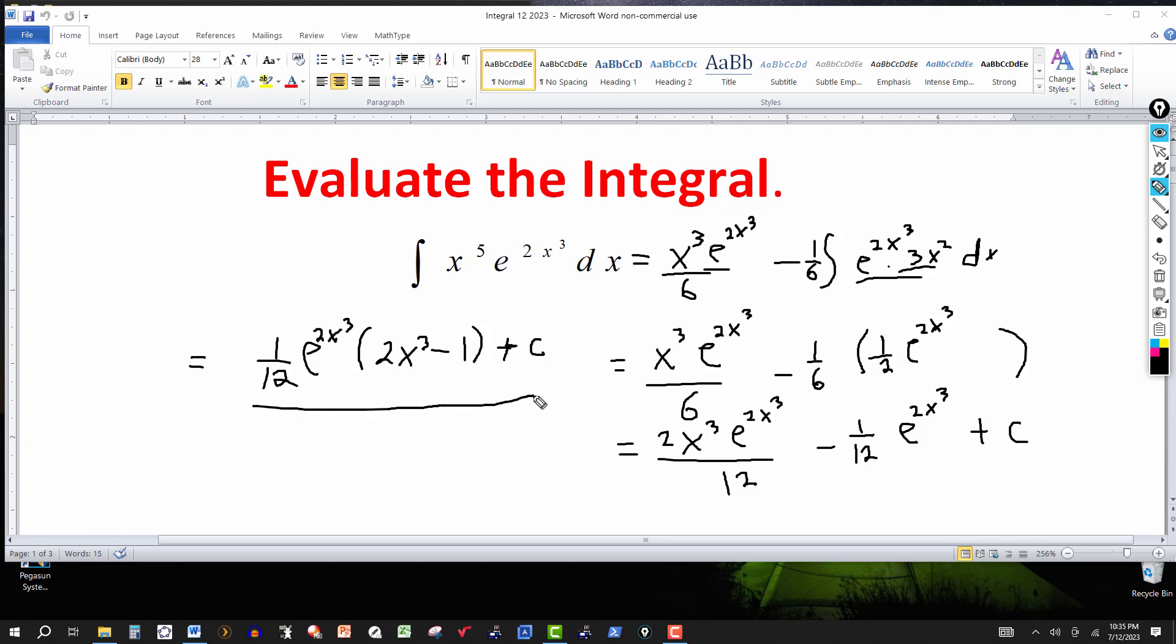So this is your final answer. 1/12 e to the 2x cubed, multiplied in parentheses there by 2x cubed minus 1, plus the constant.